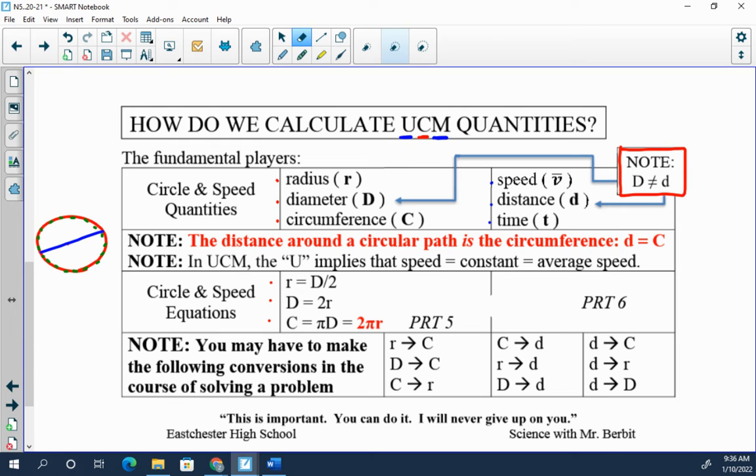All right, the uniform part of this - the uniform motion - allows us to use the v bar equals d over t equation. The v bar equals d over t. Typically we will use this as a scalar equation: the average speed equals the distance over the time.